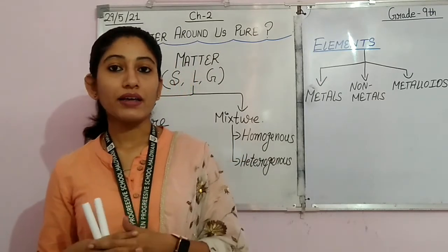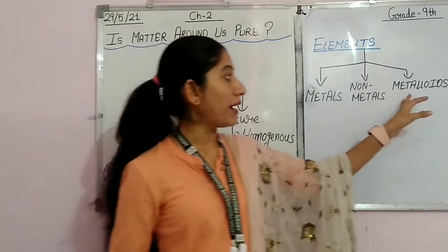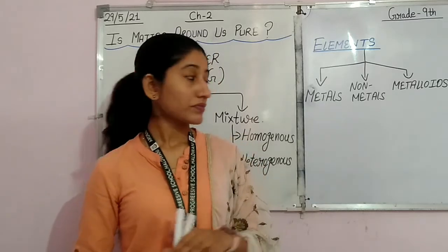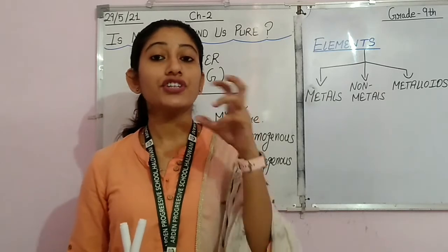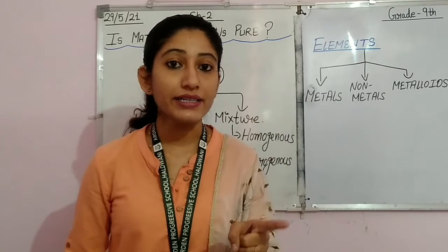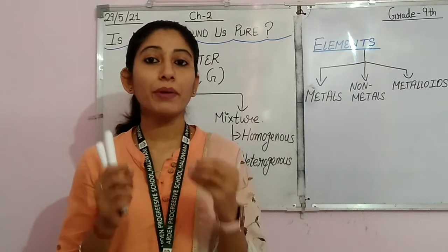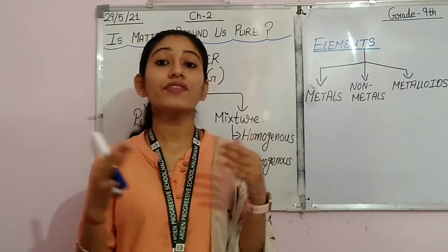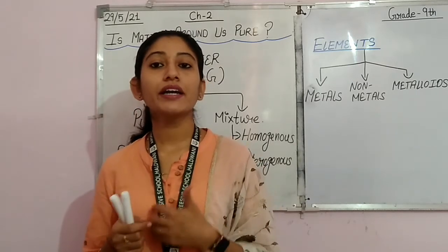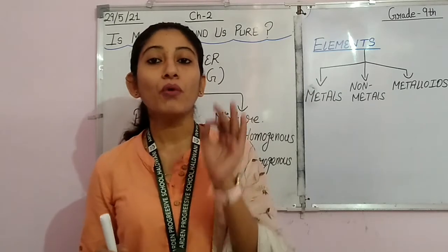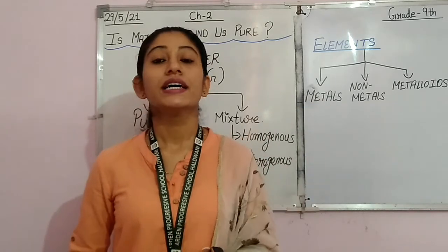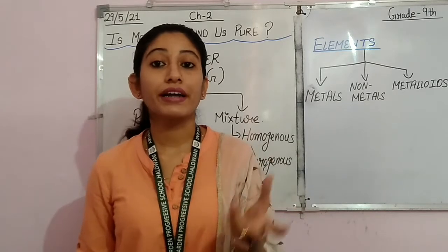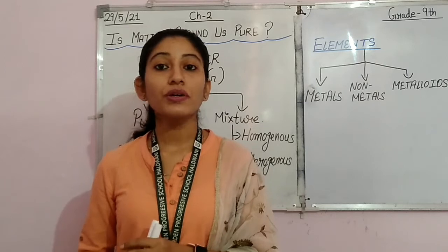The third type of elements that exist in nature are called metalloids. What are metalloids? The elements which constitute the properties of both metals as well as non-metals are called metalloids — they have intermediate properties. For example, boron comes under the category of metalloids. Similarly, silicon is actually a metalloid. Germanium is also an example of a metalloid.